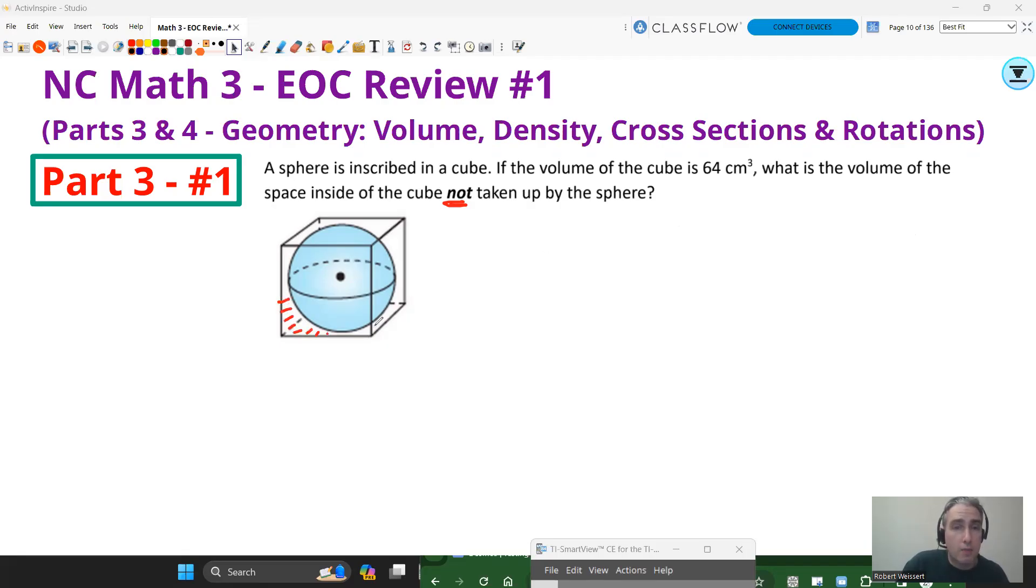The volume not taken up by the sphere - I want to know all this empty space here. So what I want to do is the volume of the cube minus the volume of the sphere. Now I know the volume of the cube is 64, so it's going to be 64 minus whatever the volume of the sphere is. We'll figure that out by using this 64.